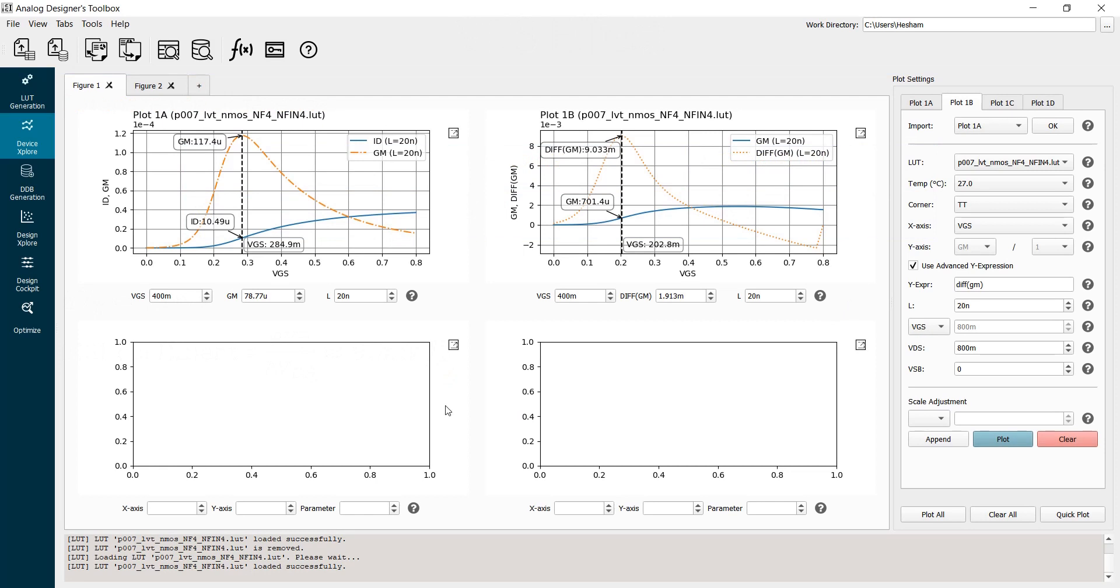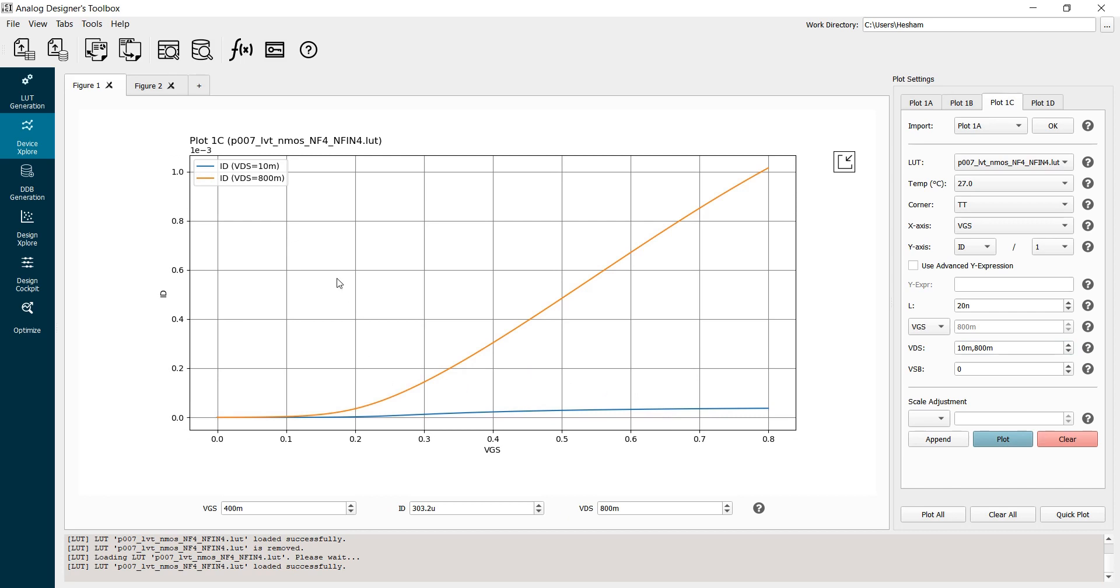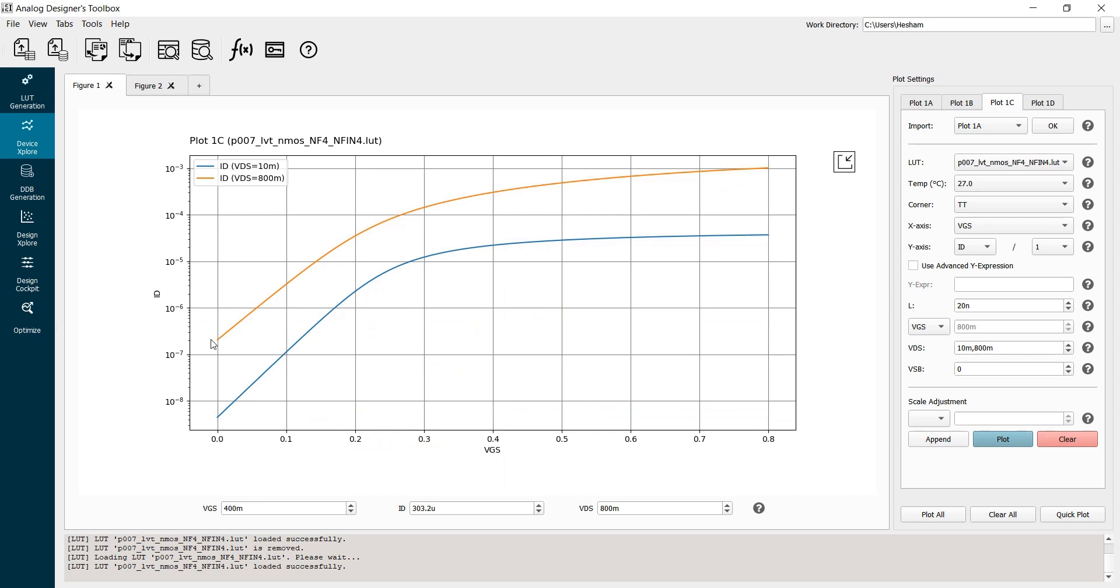We can also see the effect of VDS in the device characteristics. I will go to plot 1C and maximize the plot. Here I will put VGS on the X axis, ID on the Y axis. And I will plot the drain current for two values of VDS, 10 millivolts and 800 millivolts. So this is the drain current at these two values. I will turn on the log scale for the Y axis to see the sub-threshold current. And as you can see here, the off current at the higher VDS is much higher than the off current at the lower VDS, which indicates the reduction in the threshold voltage.